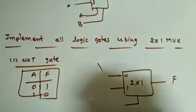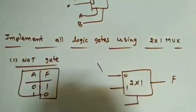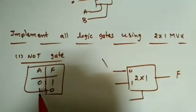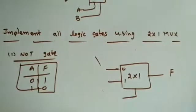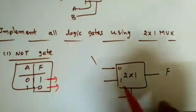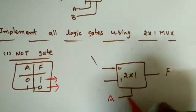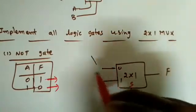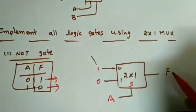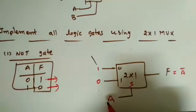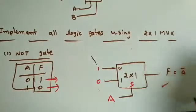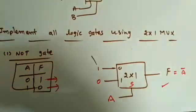We can implement all logic gates using a 2×1 MUX. For a NOT gate, the truth table shows: when A=0 output is 1, when A=1 output is 0. Choose A as the select line, give 1 as input I0 and 0 as input I1. When A=0 we get 1; when A=1 we get 0. This implements A-bar correctly.